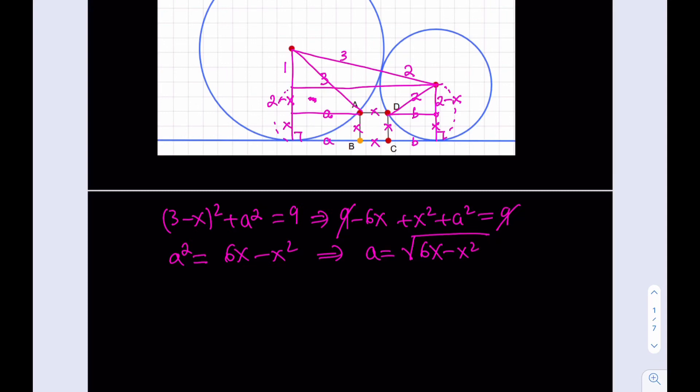All right, so this is our first equation. And then let's go ahead and use it for the smaller circle. So we're basically going to be getting from here the 2 minus x squared plus b squared. In this triangle, I'm using the Pythagorean theorem, which is equal to 2 squared, which is equal to 4. From here, I get 4 minus 4x, if I expand this, plus x squared plus b squared equals 4. 4 cancels out. If I isolate b squared here, I get 4x minus x squared. And from here, I get b equals square root of 4x minus x squared. So A and B are kind of similar except with different numbers. But those are the lengths that I'm going to be using.